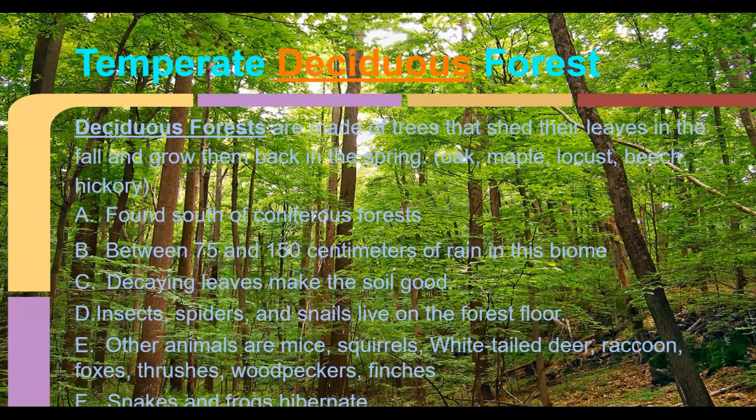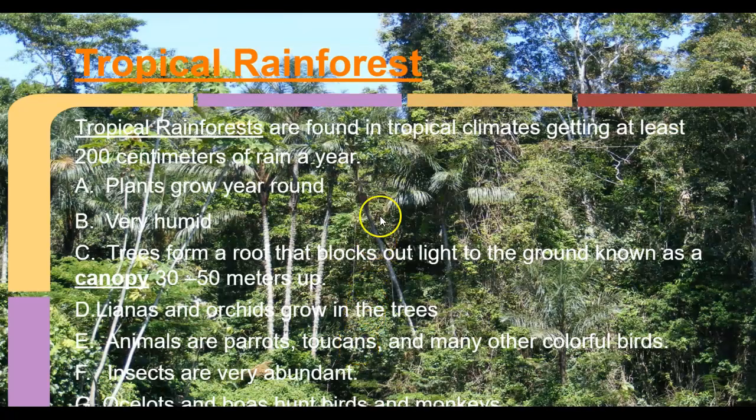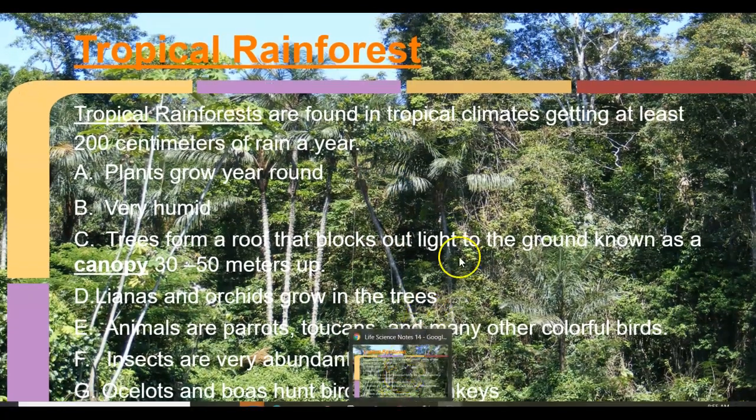Things you'll find in the deciduous forest: insects, spiders, snails, all kinds of organisms living in the canopy such as squirrels. You have mice, white-tailed deer, raccoons, foxes, thrushes, woodpeckers, finches. Because we're in that area, there's a lot of snakes and frogs, more amphibians — newts and salamanders. Newts are the orange ones; salamanders are usually black.